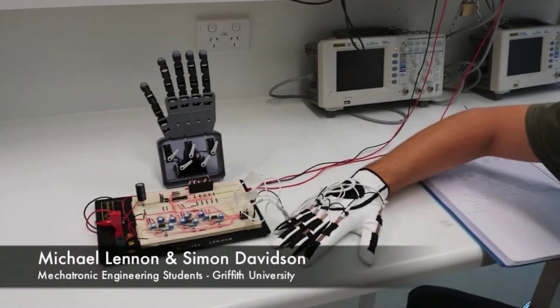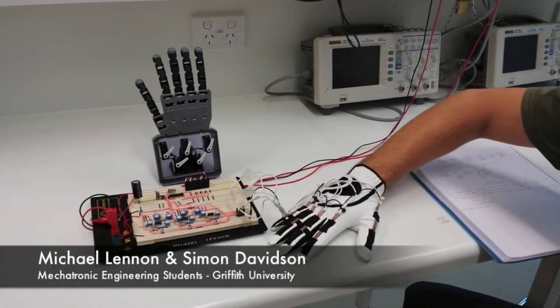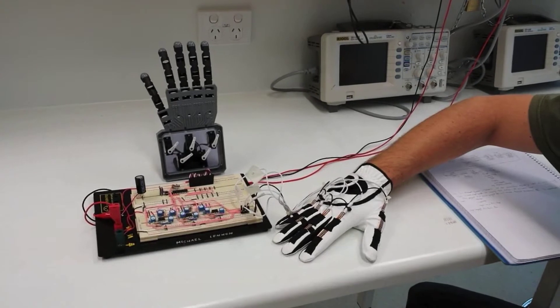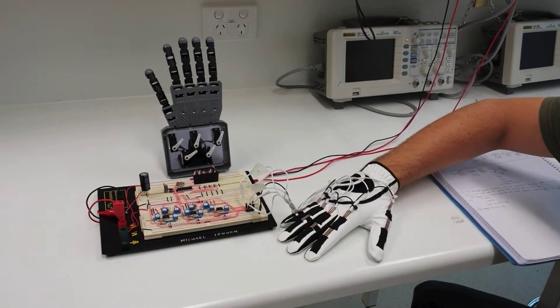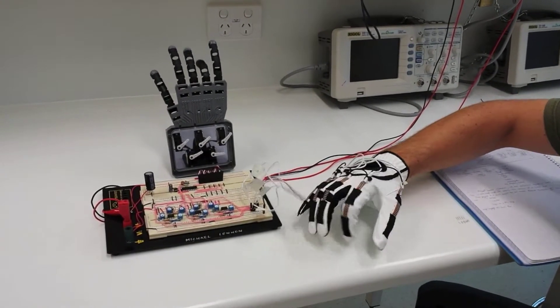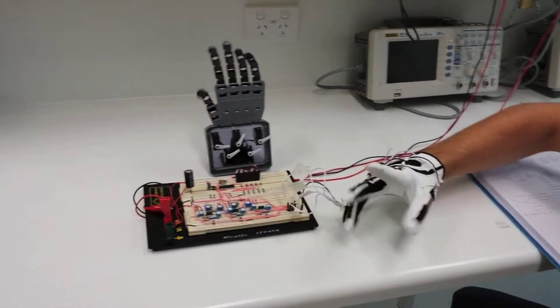Hi, I'm Michael Lennon and I'm Simon Davidson, and we are Mechatronic Engineering students at Griffith University Gold Coast. This is our robot hand. It mimics the motions of a human hand.